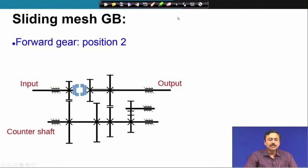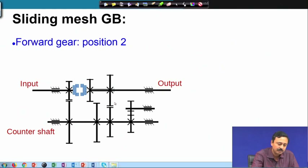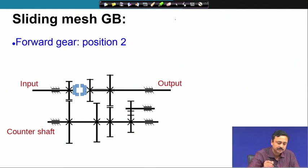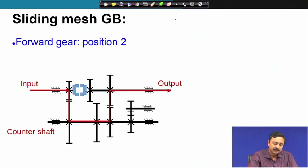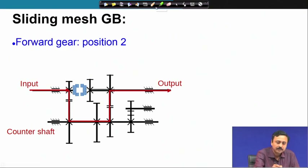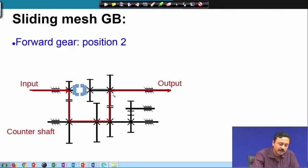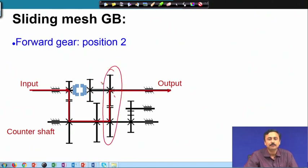In position 2, these two gears are in mesh. Therefore, our transmission path changes. Because the number of teeth are different, this gear pair has a different transmission ratio.